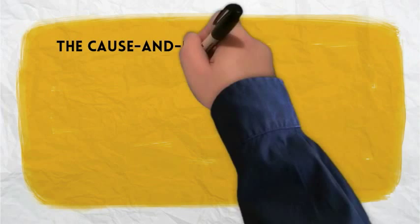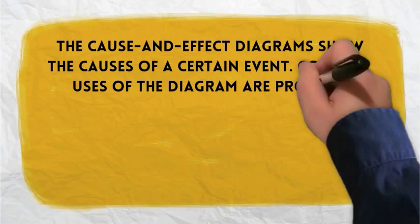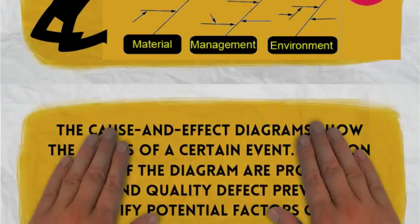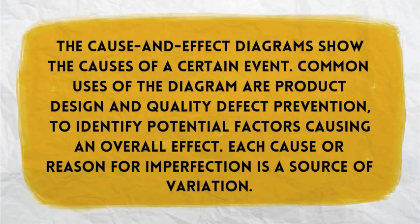The Cause and Effect Diagrams show the causes of a certain event. Common uses of the diagram are product design and quality defect prevention to identify potential factors causing an overall effect. Each cause or reason for imperfection is a source of variation.